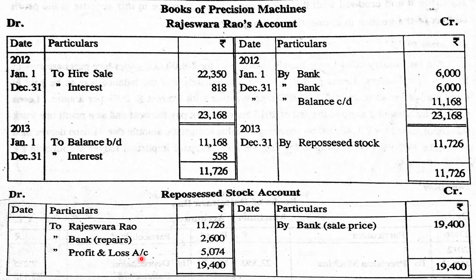Summary: Journal entries up to the date of default — interest and depreciation — are recorded in both vendor and buyer books. Then the buyer closes the vendor account and transfers the balance. The profit or loss on repossession is transferred to the Profit and Loss Account. In the vendor's books, the repossessed stock account is opened, repair expenses debited, sale proceeds credited, and the resulting profit or loss transferred to the Profit and Loss Account.